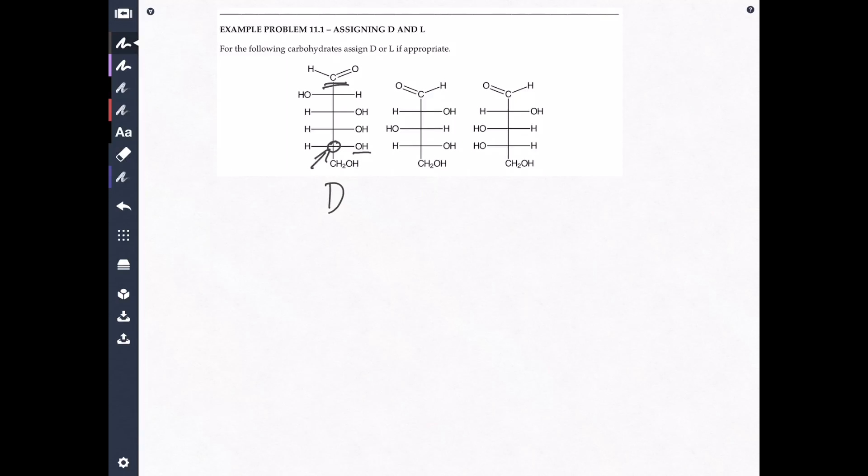Find the carbonyl. Find the chiral carbon that's furthest away from it. Find the OH. Assign D or L. If the OH is on the right, it's D. If the OH is on the left, it's L. Okay. Let's do the second one together.